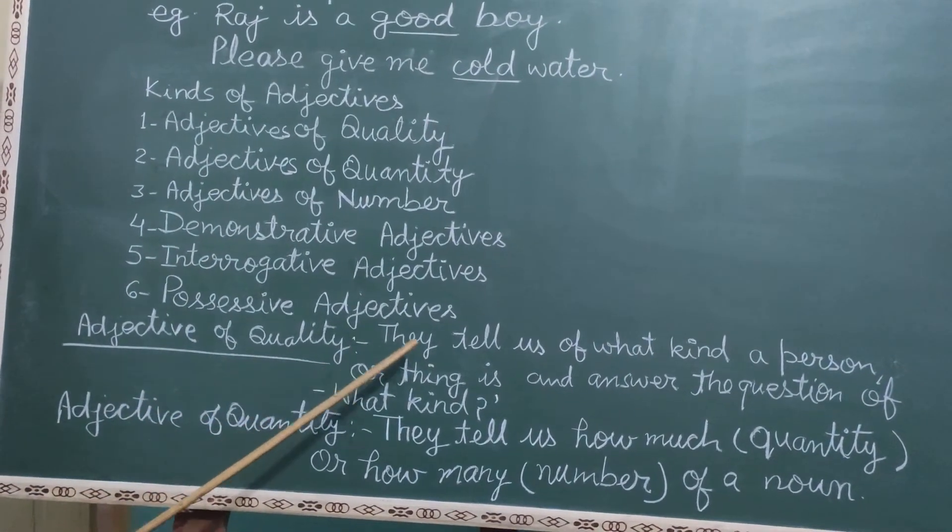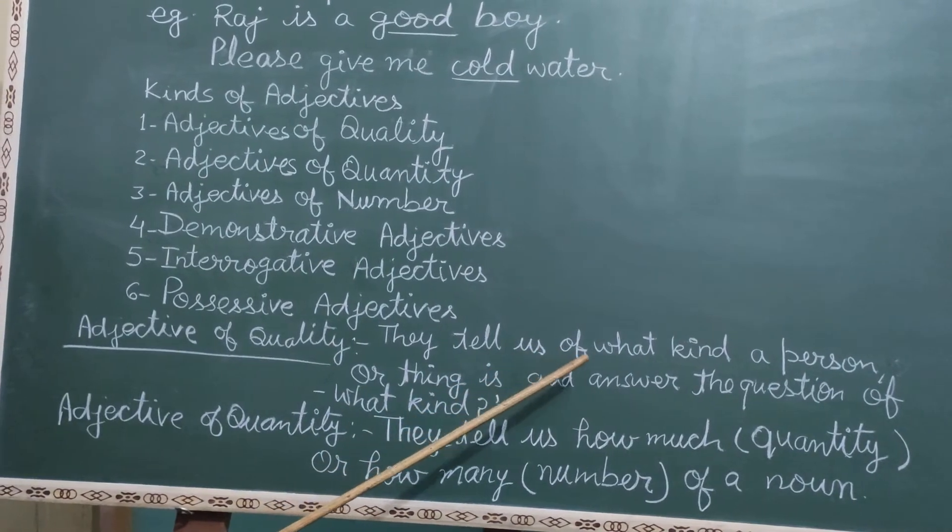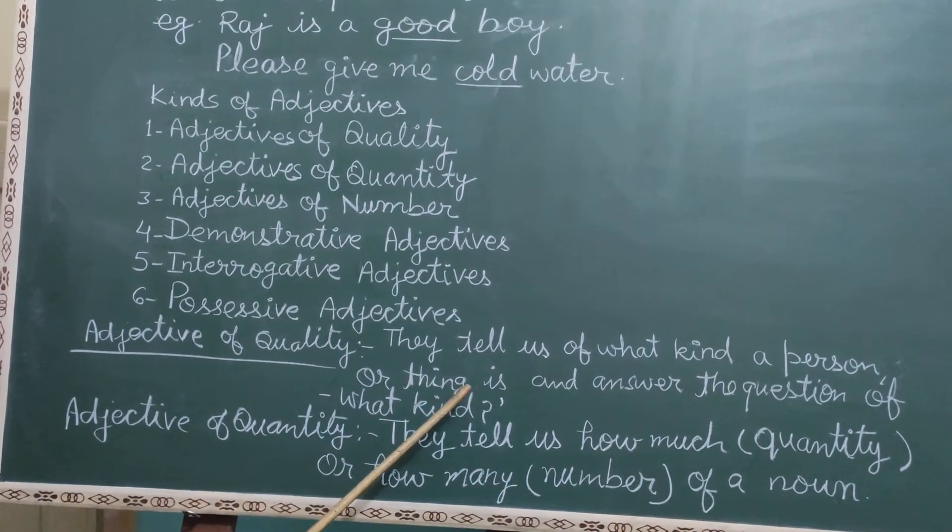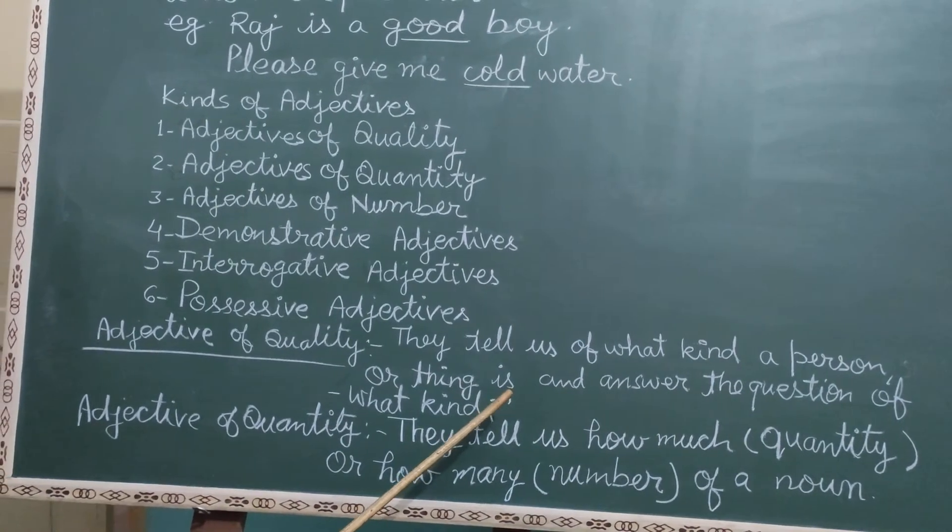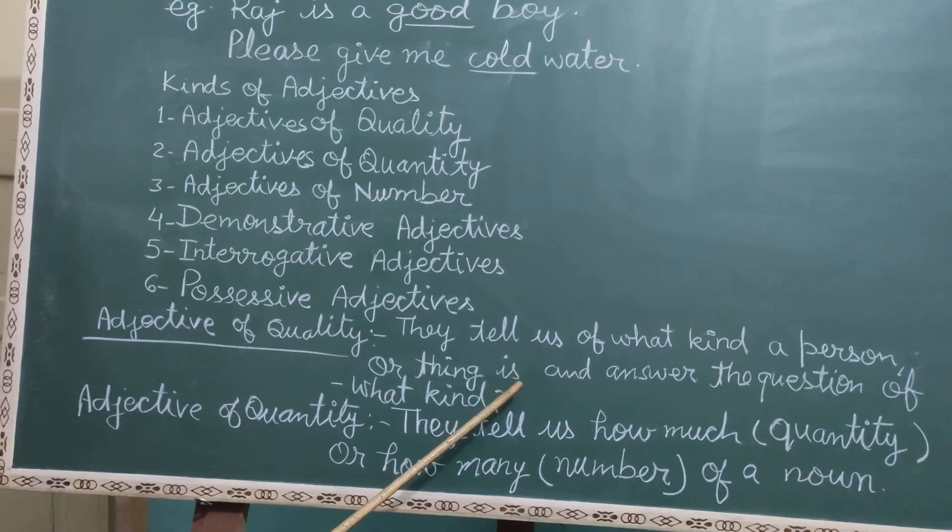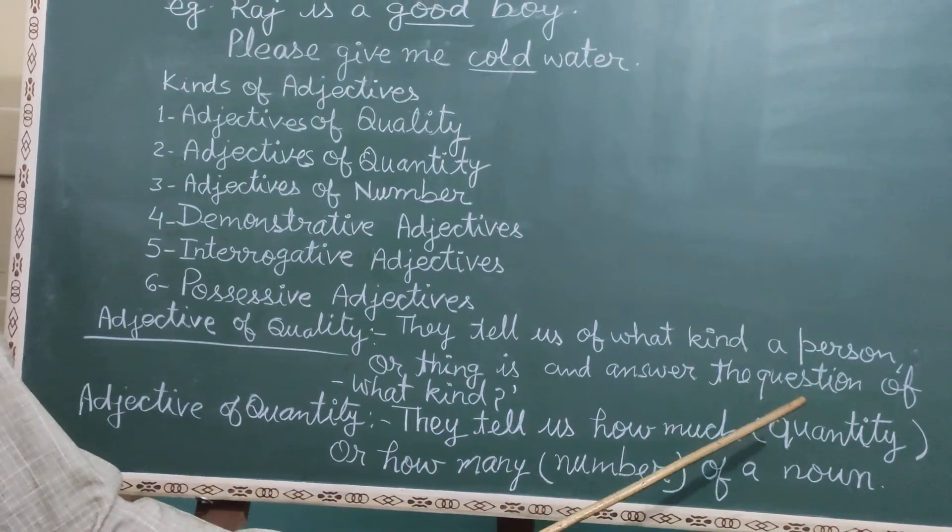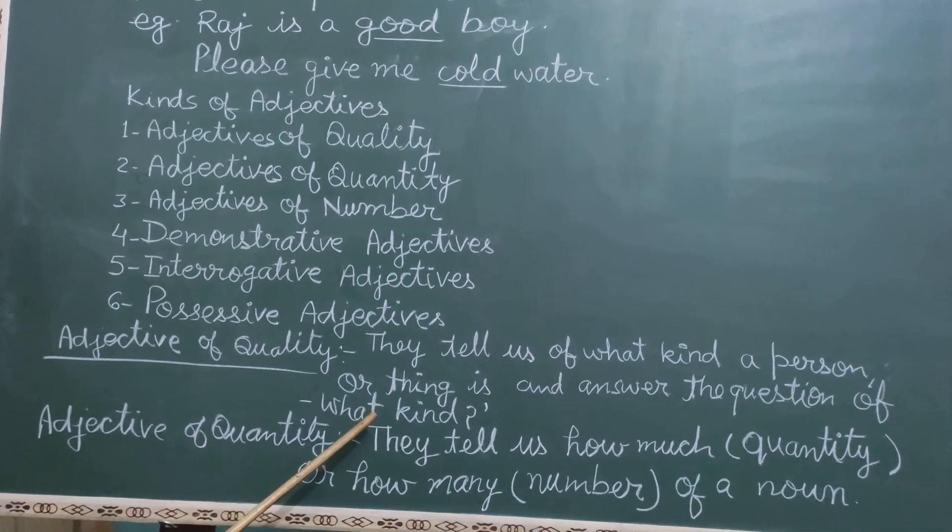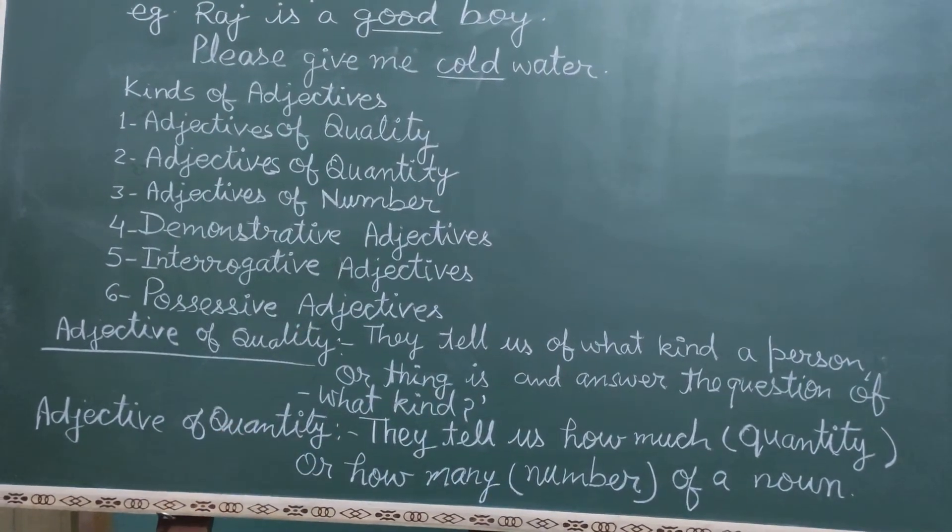adjectives of quality. They tell us of what kind a person or thing is. Koi vyakti ya vastu kis prakar ki hai, yeh batathe hai hume, and answer the question of what kind.